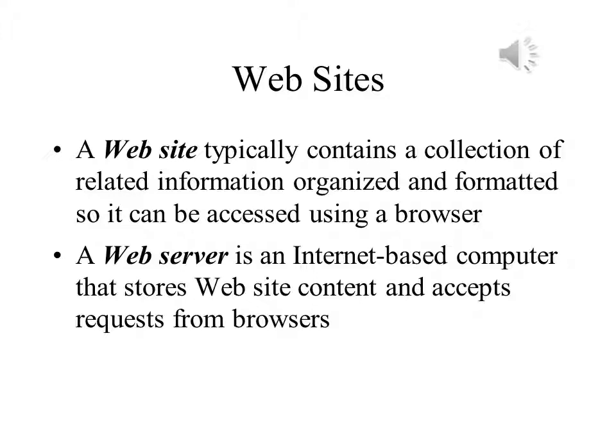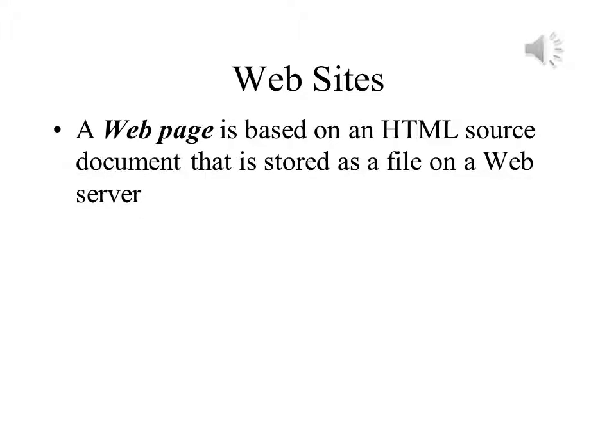A website is a collection of related information that is organized and formatted so it can be accessed through a browser. Usually it is hosted on one web server or on a collection of servers at one location, but this is not always the case. A web server is a computer connected to the Internet that stores web contents, accepts requests from browsers, and then honors those requests by furnishing the web pages that are requested. A web page is a document stored on a web server.